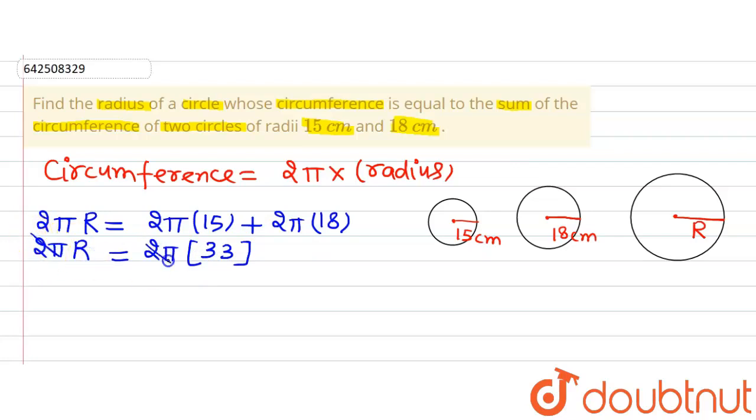So 2π will get cancelled out by 2π. R is equal to 33 cm.